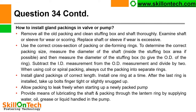When using coil or spiral packing, always cut the packing into separate rings. Install gland packing of correct length, install one ring at a time. After the last ring is installed, take up bolts finger tight or slightly snugged up, and then finally tighten the gland follower bolts by a spanner. Allow packing to leak freely when starting up a newly packed pump. In the starting of the pump, allow some water to leak from the stuffing box to provide cooling to the gland packings and to let them well set. When once it is set and there is no smoke from the gland packings, slightly tighten the gland follower bolts. Provide means of lubrication through the lantern ring by supplying water, oil, grease or liquid handled in the pump.